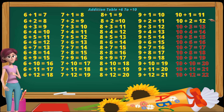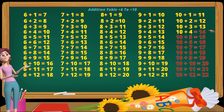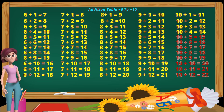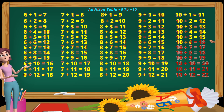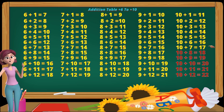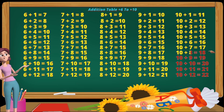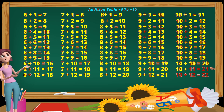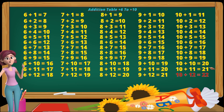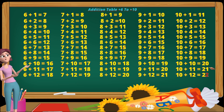Ten plus one equals eleven. Ten plus two equals twelve. Ten plus three equals thirteen. Ten plus four equals fourteen. Ten plus five equals fifteen. Ten plus six equals sixteen. Ten plus seven equals seventeen. Ten plus eight equals eighteen. Ten plus nine equals nineteen. Ten plus ten equals twenty. Ten plus eleven equals twenty-one. Ten plus twelve equals twenty-two.